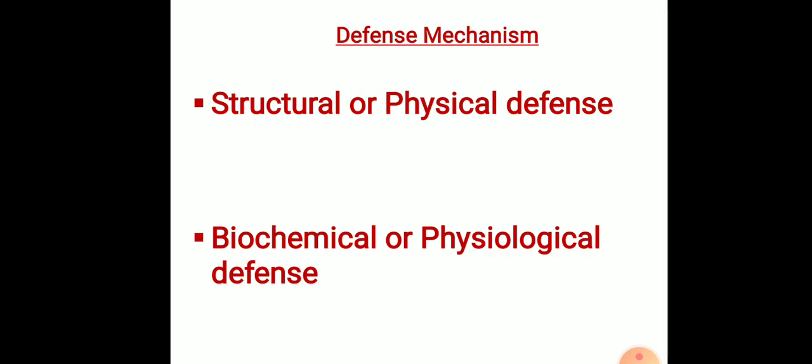Structural or physical defense mechanism refers to structural obstacles, whether already present or formed after infection, that defend the plant against attack by pathogens. On the other hand, biochemical changes take place in the cells and tissues of the plant and such reactions produce substances within the tissue of cells. This type of defense is known as biochemical defense mechanism. Today we discuss details about the structural defense mechanism, which is very important for plant pathology.